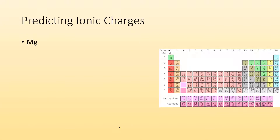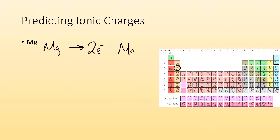Let's take a look at magnesium on the periodic table. It has 12 protons and electrons. It wants to lose them so it can become like neon, which only has ten. So magnesium is going to lose two electrons, which means its charge is going to become plus two. That's the charge of magnesium because it lost those two electrons — when it was neutral it had them, and it got rid of them to have the same number of electrons as neon.